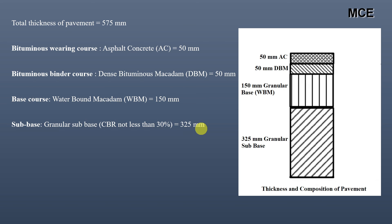The cross-section of the pavement shows: 50 mm wearing course of asphaltic concrete at the top, 50 mm binder course of dense bituminous macadam, 150 mm granular base course of water-bound macadam, and 325 mm granular sub-base of crushed stone aggregates with CBR not less than 30%. This is how we design the flexible pavement and find the composition of each pavement layer.